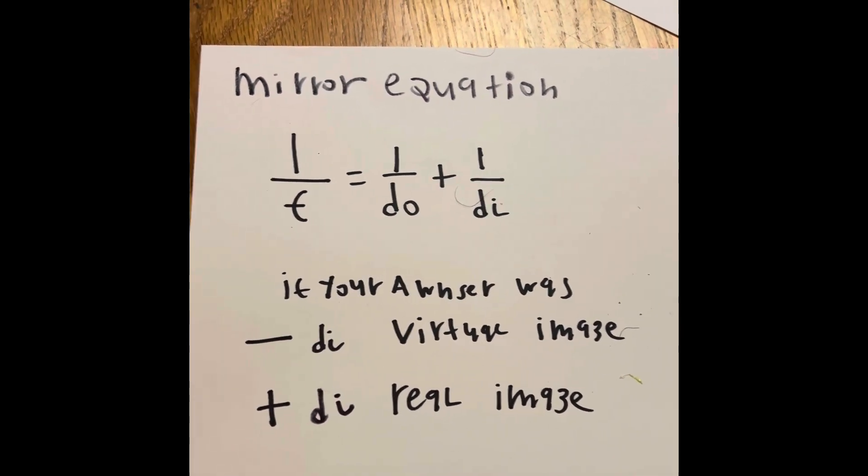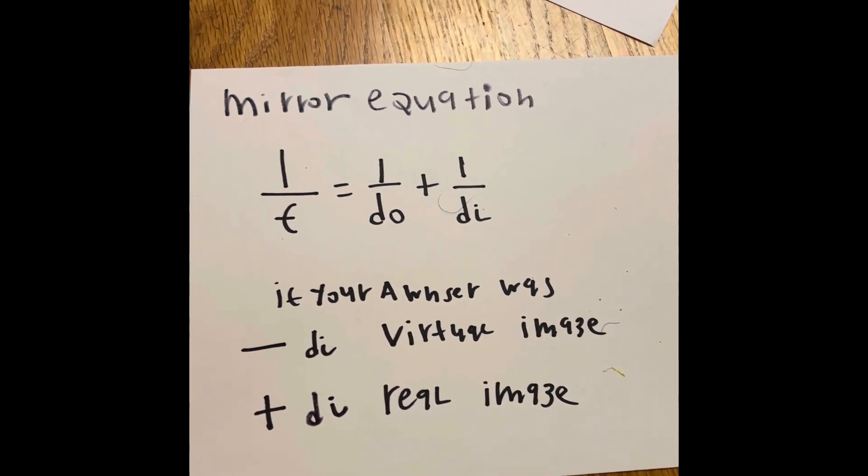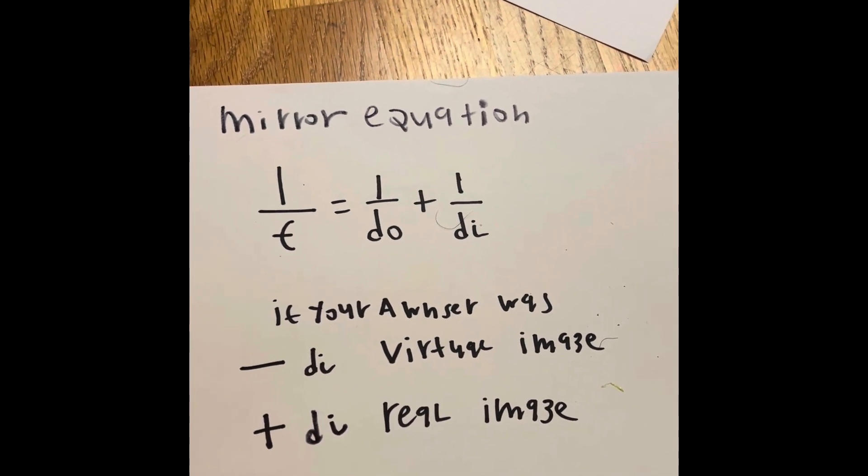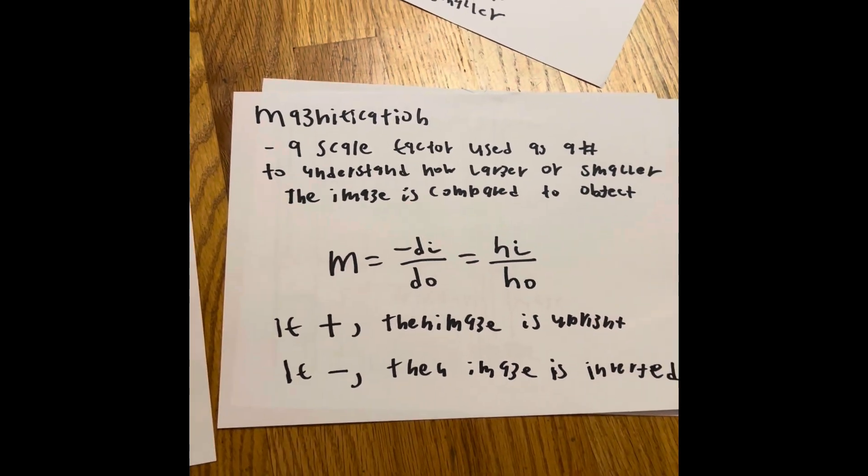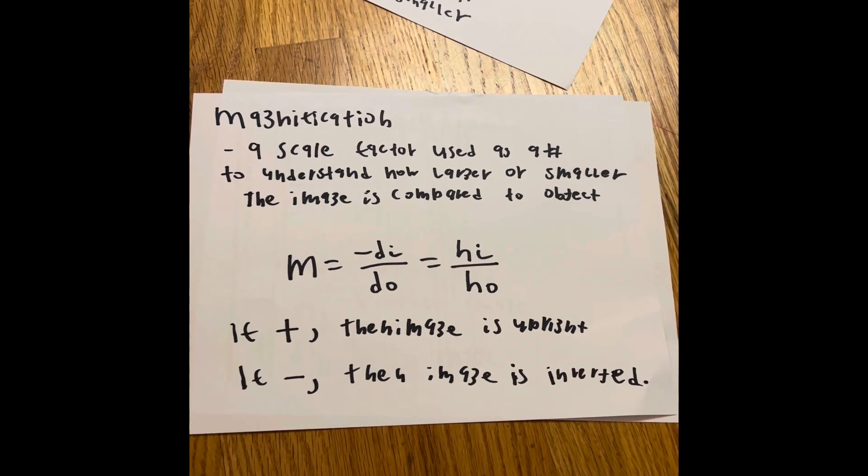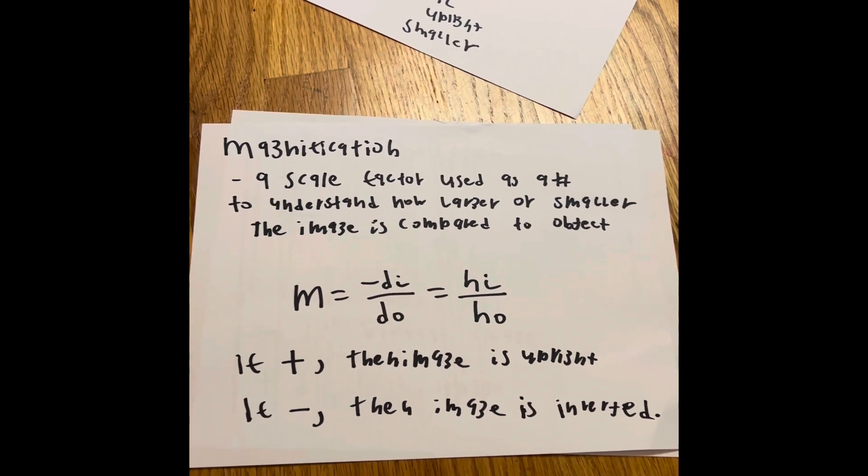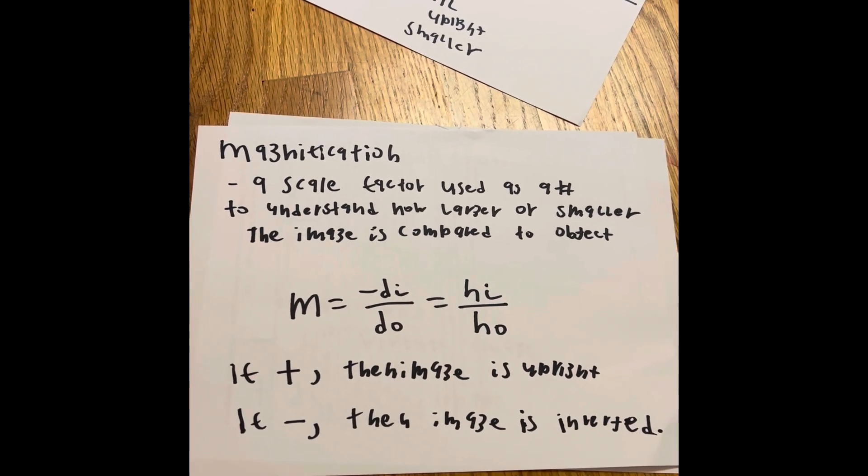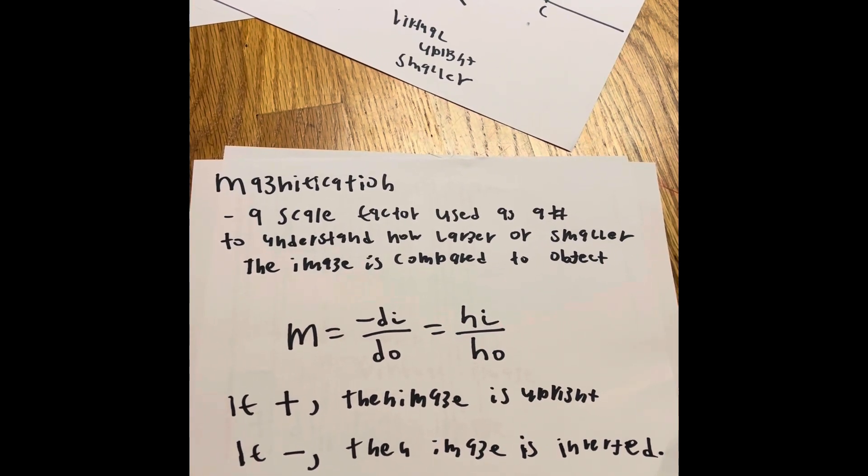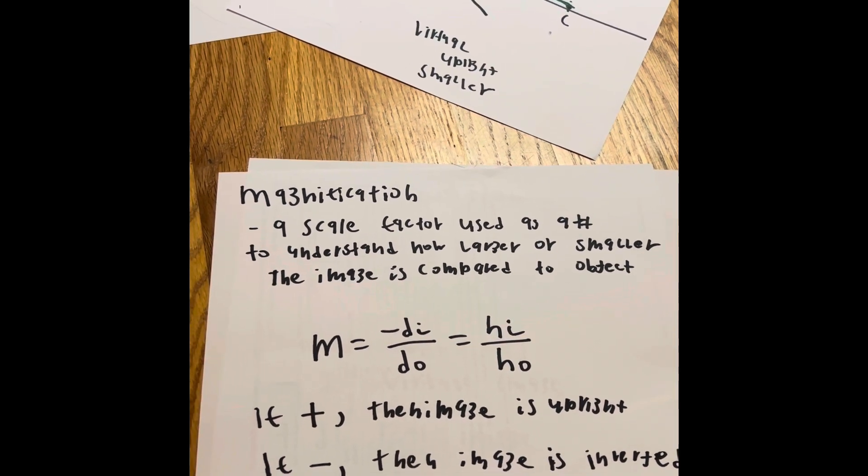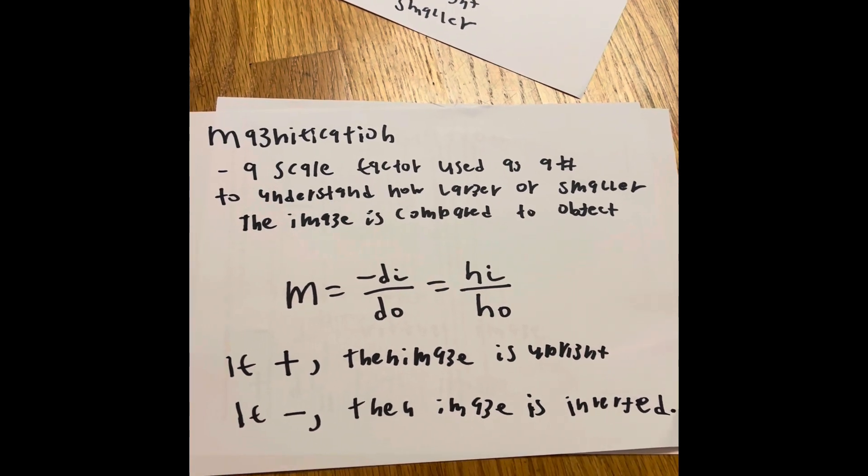Let's take a look at the second formula, because we need to use the first one in order to do the second one. This one is specifically used for magnification, which you would use after you complete your mirror formula. Magnification is a scale factor that's used as a number to help better understand how large or smaller the image is compared to the object. Like, is it like a magnifying glass, or are you wearing the binoculars the wrong way, making the image look smaller?